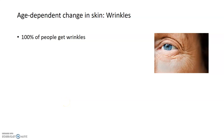When talking about age-dependent changes in the skin, the most obvious one that we think of and that we have all seen and might be experiencing ourselves is wrinkles. One good thing to note if you're worried about your own wrinkles is that 100% of people will get wrinkles sometime within their life, so it's not a unique problem. There are some particular reasons for this, and we're going to talk about the changes that happen to your skin that can lead to the appearance of wrinkles.